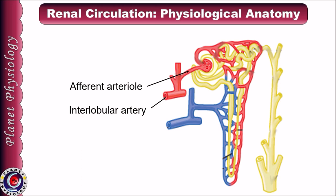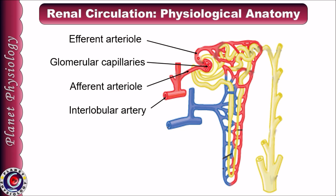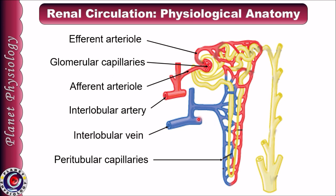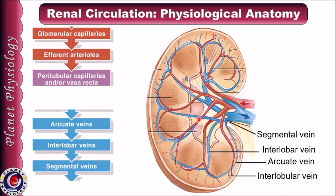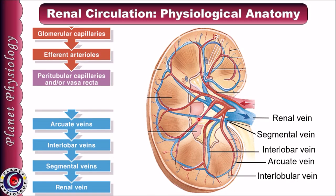Afferent arterioles branch to form a tuft of capillary network within the renal corpuscle, known as glomerular capillaries. These capillaries unite to form efferent arterioles, which leave the renal corpuscle. The efferent arteriole is narrower than the afferent arteriole. Efferent arterioles again divide to form another set of capillary network around the renal tubules, called peritubular capillaries. Peritubular capillaries join to form interlobular veins, then arcuate vein, interlobar vein, segmental vein, and finally the renal vein, which leaves the kidney through the hilum. Efferent arterioles of juxtamedullary nephrons give rise to special capillaries called vasa recta.